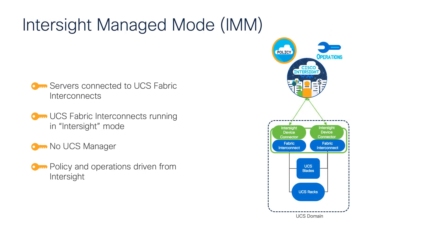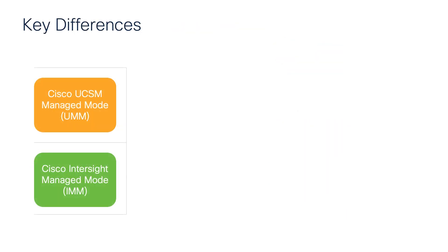Finally, and certainly not least, Intersight Managed Mode or IMM. The key thing to remember with IMM is that the fabric interconnects are configured in Intersight Mode, which means they are not running UCS Manager. In fact, there is no UCS Manager at all with IMM. In IMM mode, all policy and operations are driven and owned by Intersight. Therefore, you must claim your pair of fabric interconnects or your IMM domain into Intersight, and then you can configure and manage from within the Intersight platform.